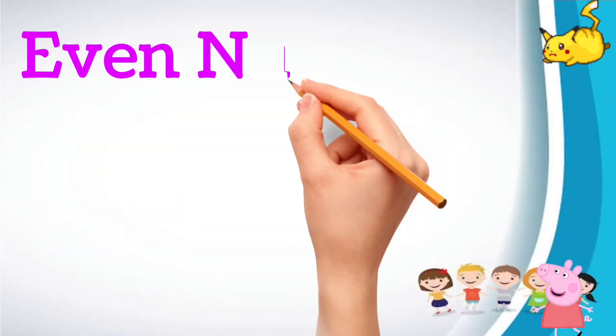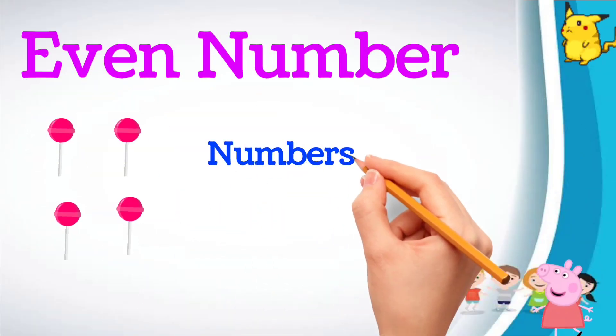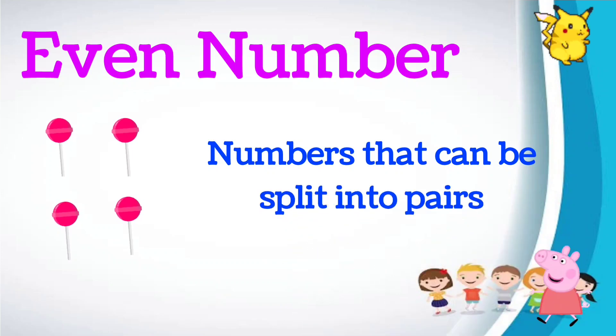What are even numbers? Numbers that can be split into pairs, that is group of two, are even numbers.